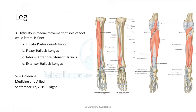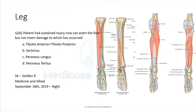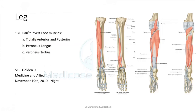Difficulty in medial movement of the sole — inversion — while lateral movement is fine. Lateral movement is mostly done by the peroneus muscles. Medial movement — inversion — is done by both tibialis anterior and tibialis posterior. Tibialis anterior attaches on the medial aspect of the foot and inverts when it raises the foot. Tibialis posterior attaches on the medial plantar aspect and pulls the medial border upward. The answer is tibialis anterior and tibialis posterior.